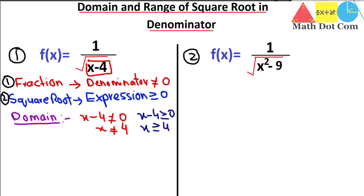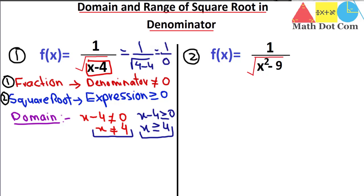We need to consider both conditions together. Condition two says x ≥ 4, but condition one says x cannot equal four. So four is excluded — if we put x = 4, we get 1 divided by √(4−4), which is 1 divided by zero: undefined. Therefore the domain is x > 4, written as (4, +∞) with a parenthesis because four is not included.